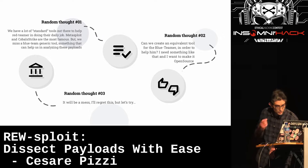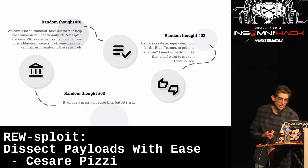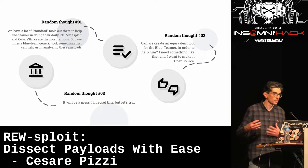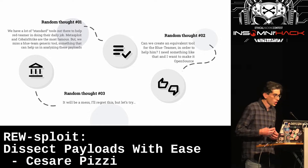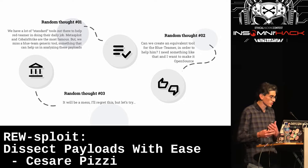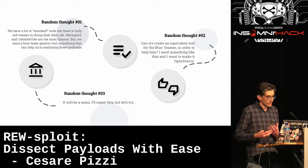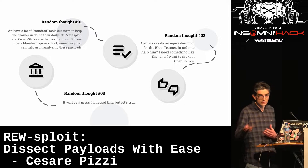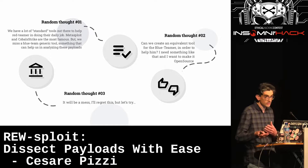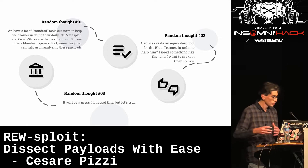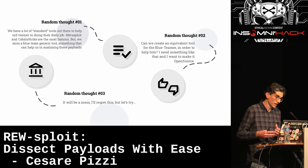Today we are here to speak about RE-sploit. I started from looking at my daily job as a reverse engineer and realizing that we have a lot of standard tools to help red teamers. Most of you probably know Metasploit or Cobalt Strike — really well-done frameworks that help attackers build up their attack chains.